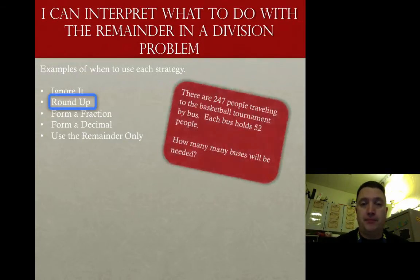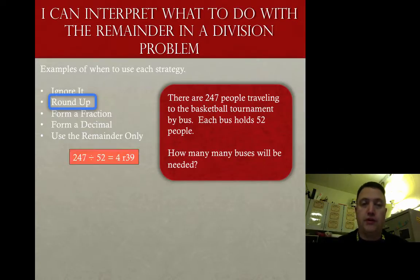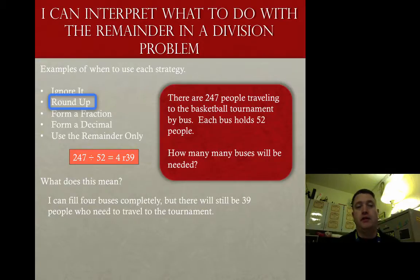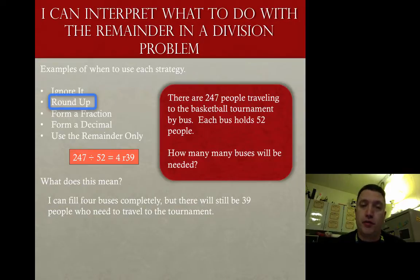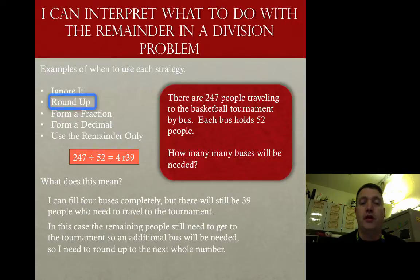The second strategy is round up. There are 247 people traveling to a basketball tournament by bus. Each bus holds 52 people. How many buses will be needed? When I solve that division problem, I get four with a remainder of 39. It means I can fill four buses completely, but there are still 39 people who need to travel to the tournament. The remaining people do still need to get on a bus — they'd be pretty mad if we left them behind. So we need to round up to the next whole number: instead of four remainder 39, we round up to five buses.